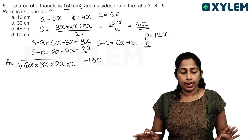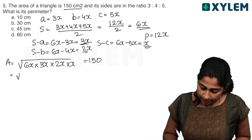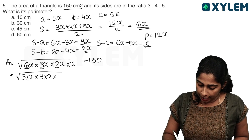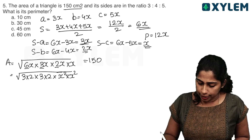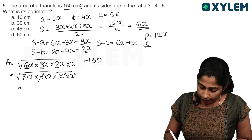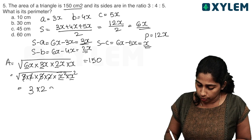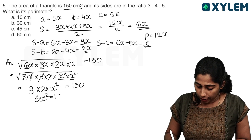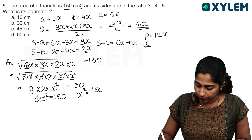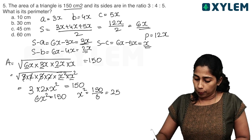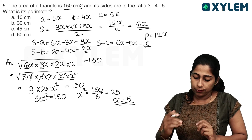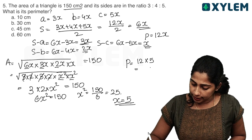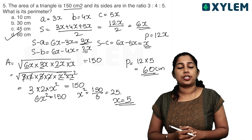Area is 150. So root of 6x times 3x times 2x times x equals 150. That simplifies to root of 36x⁴ equals 6x² equals 150, so x² equals 25, meaning x equals 5. Perimeter equals 12x equals 12 times 5 equals 60.